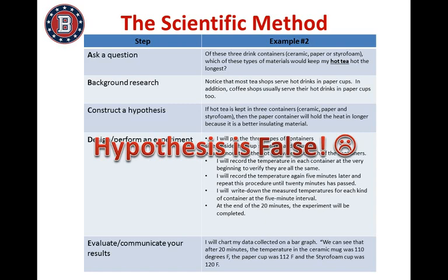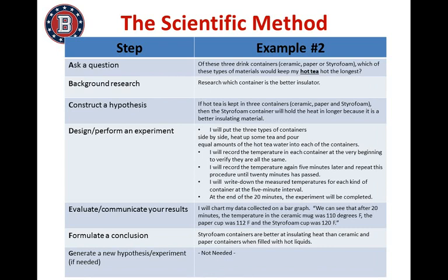I would need to go to my next step of formulating a new hypothesis: if hot tea is kept in three containers — ceramic, paper, and styrofoam — then the styrofoam container will hold the heat in longer because it is a better insulating material. This time in my background research I'm going to research which container is a better insulator. My experiment design will be the same, and I'll reach the same results. My conclusion will then be: styrofoam containers are better at insulating heat than ceramic and paper containers when filled with hot liquids. Here is another example of how we've used the scientific method.